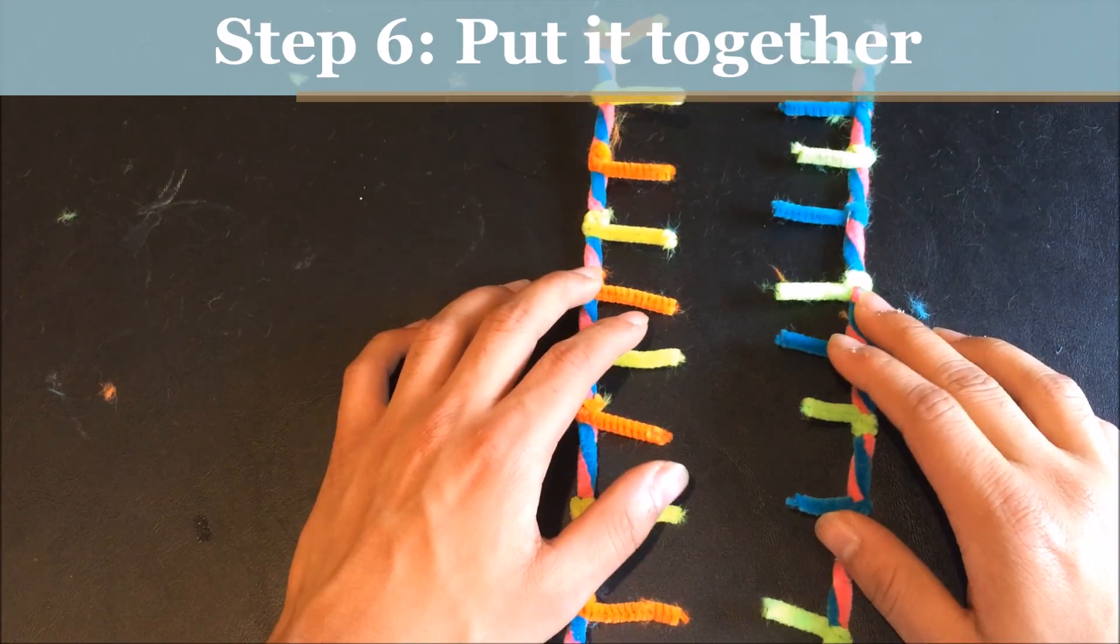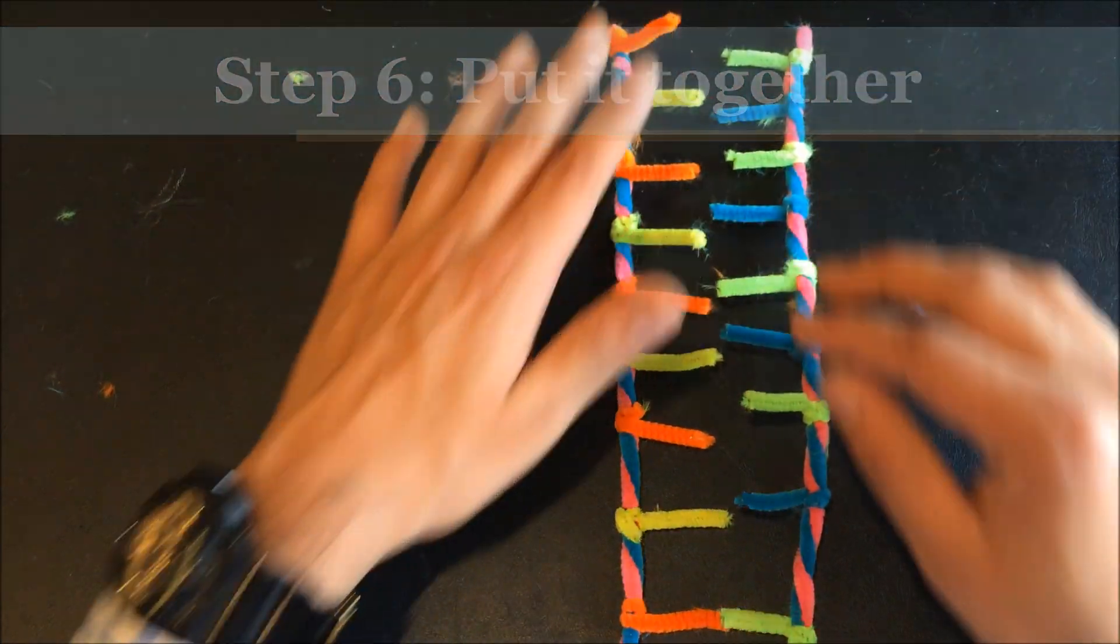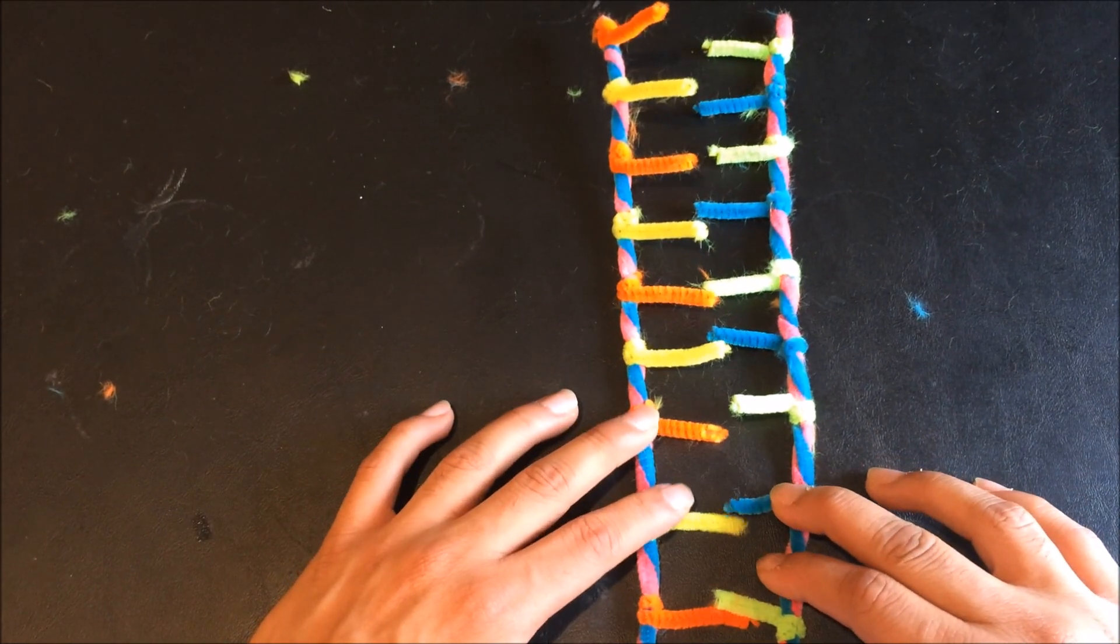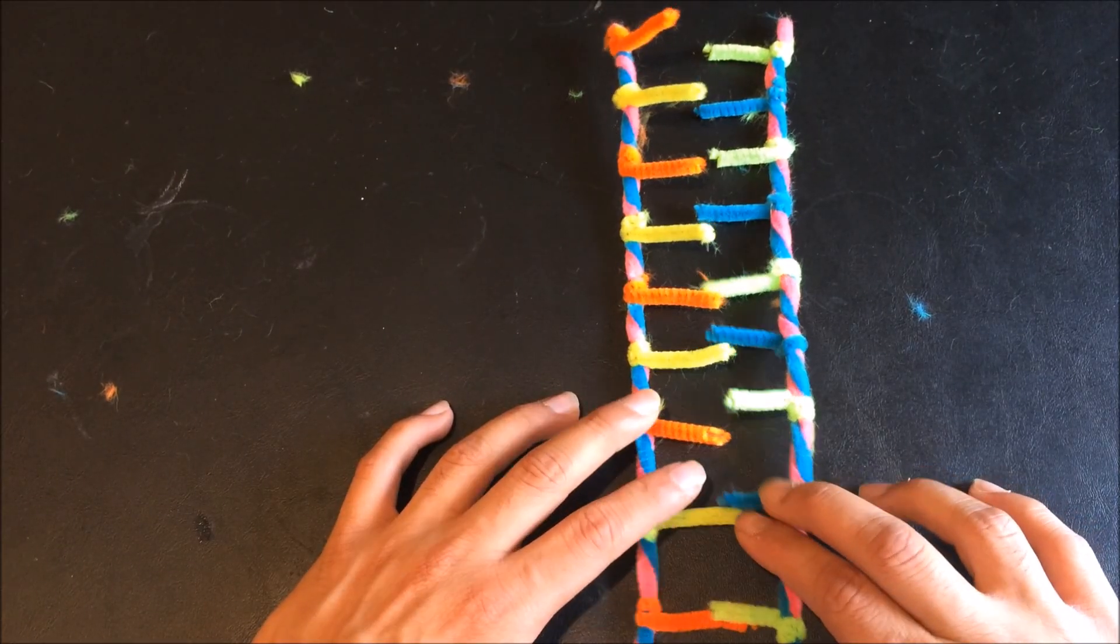Once you have two strands, you're ready for the next step, and that is putting them together. Hopefully, you made it so that they're pretty much aligned. Even if not, that's okay. You'll be able to turn the strands and align them anyways.